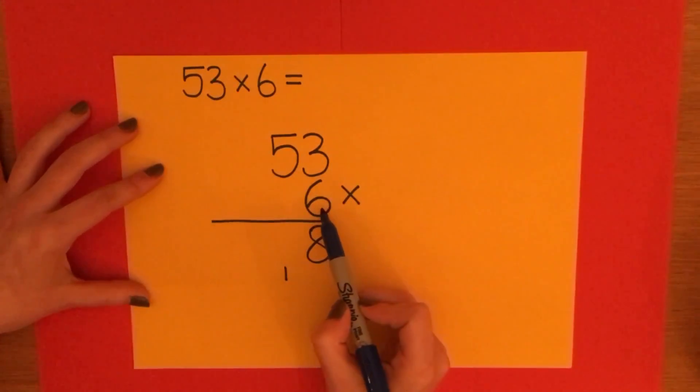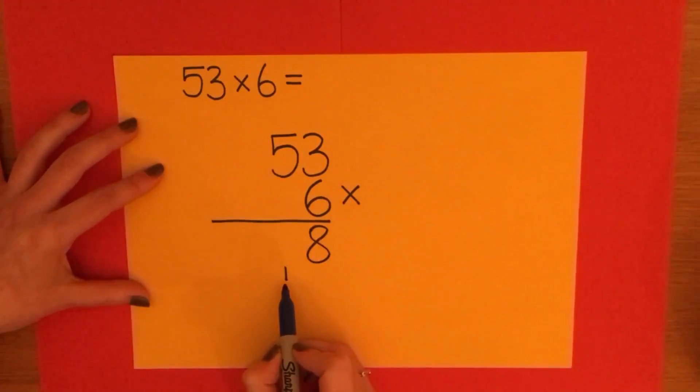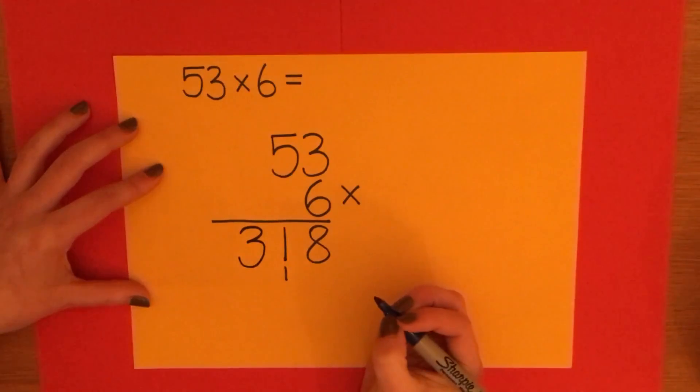5 times 6 is 30. But I've also carried 1. So 31 will be my answer. So I'm going to put my 1 down. And I need to carry across my 3 for my 31. And because there's nothing else to multiply, I can put it in the hundreds column straight away.